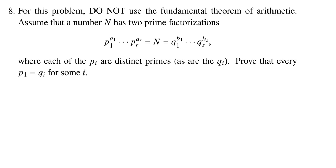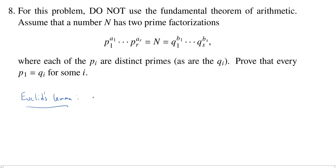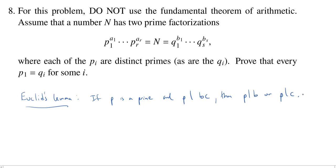We talked about Euclid's Lemma in a previous video, so let's quickly write it down again. Euclid's Lemma says that if p is a prime and p divides a product b times c, then p divides b or p divides c.